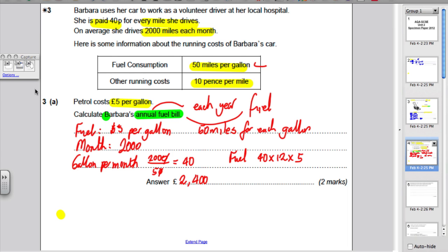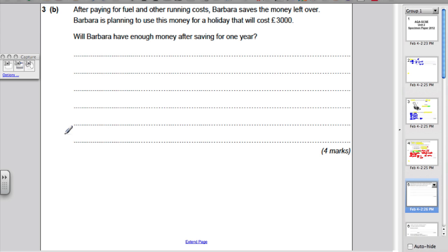Okay, next question. After paying for fuel and other running costs, Barbara saves the money left over, and she's planning to use the money to pay for a holiday that costs £300. Will Barbara have enough money after one year? So, the question we have to answer is, either yes, she has enough, or no, she doesn't. Okay, well, firstly, let's work out how much money she makes a year. What's her income?